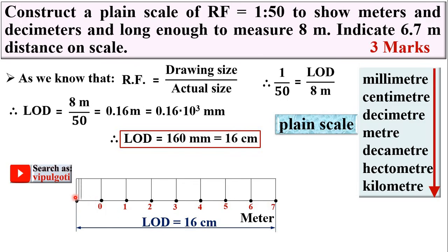Now divide the first division into 10 equal parts. You know that this one division represents 1 meter, and if you divide into 10 divisions, if 1 meter is divided by 10, you will get decimeters. Each division represents 1 decimeter.